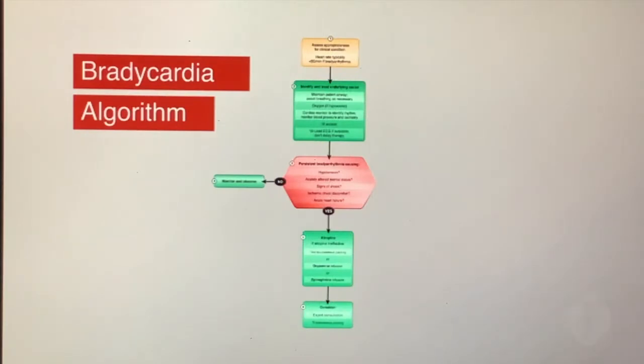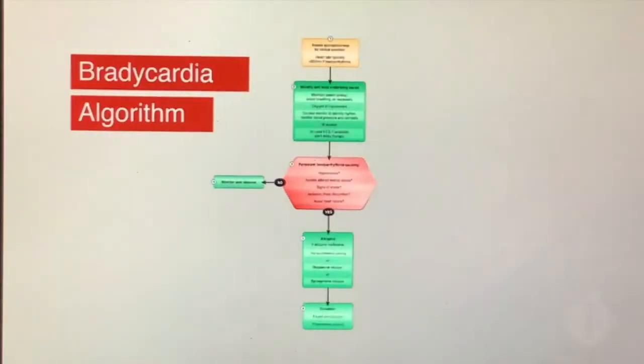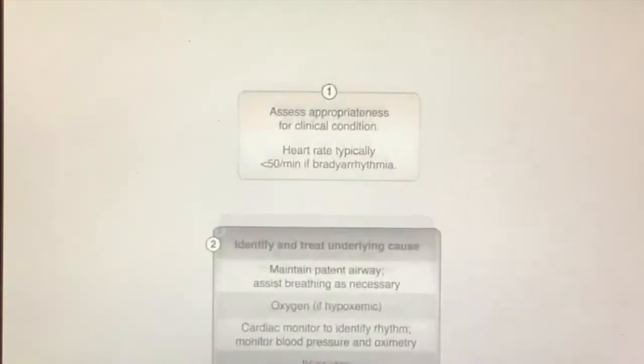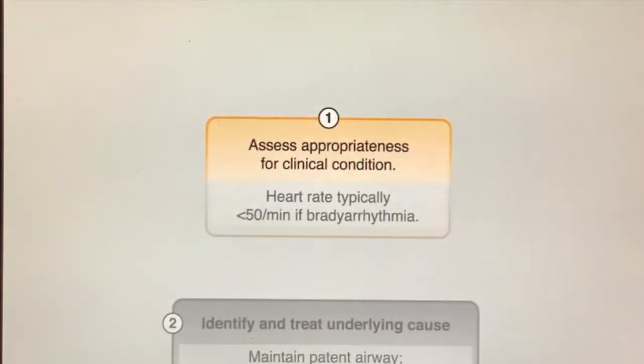The bradycardia algorithm outlines the steps for assessment and management of a patient presenting with symptomatic bradycardia with a pulse. Implementation of this algorithm begins with the identification of bradycardia, which is a heart rate less than 50 beats per minute.